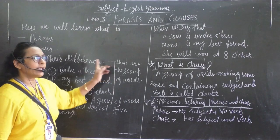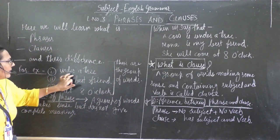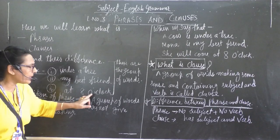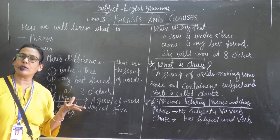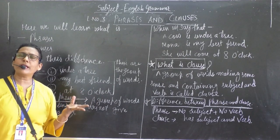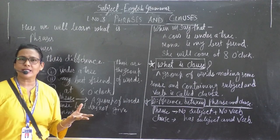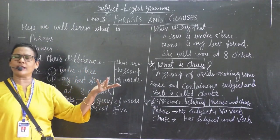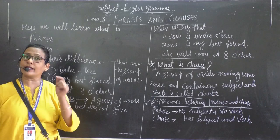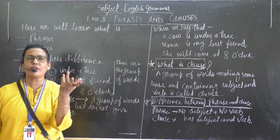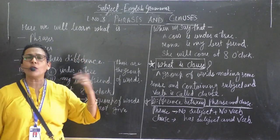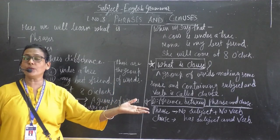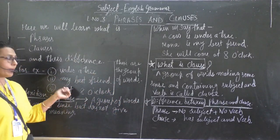What do you think? These are groups of words — 1, 2, 3 words; 1, 2, 3 words; 1, 2, 4, 5 words. These are groups of words, but we are not getting a complete meaning of what he or she wants to say. Under the tree — what is this? My best friend — what?